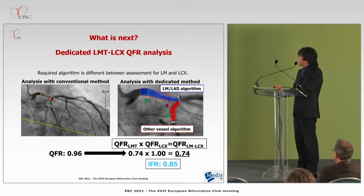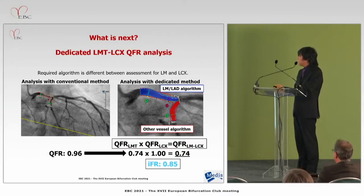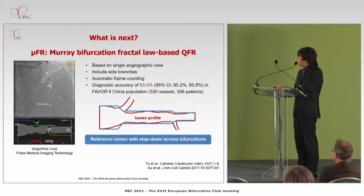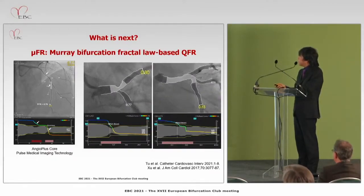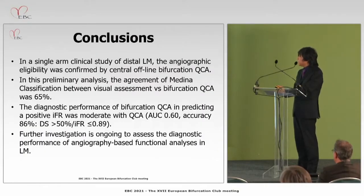This was a descriptive analysis of QCA. For the next steps, we would like to assess physiological pressure drop based on QCA, calculating QFR in both branches using a dedicated method for QFR in the circumflex. We are also collaborating with Professor Tu, who has new QFR software based on a single angiographic view with good accuracy. We will apply this method and perform validation in this cohort.